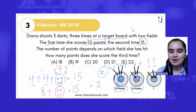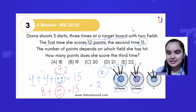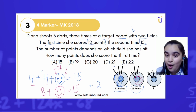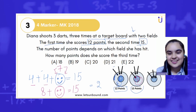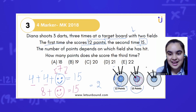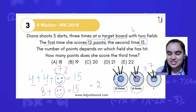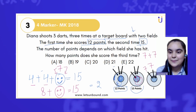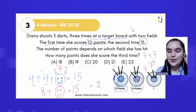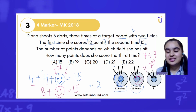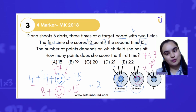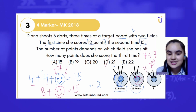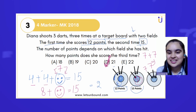Now let's solve the third attempt. All three arrows are in the inner field, which means they are worth 7 points each. 7 plus 7 plus 7: 7 plus 7 is 14, plus 7 is 21. We got our answer — that is option number D.